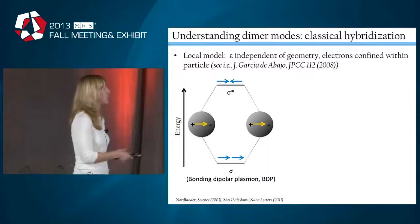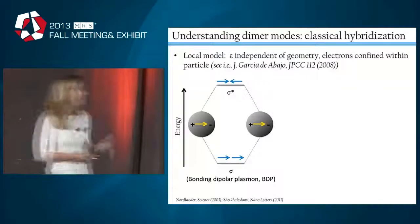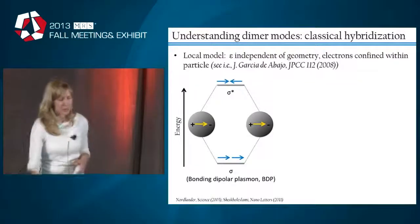Another way of considering this local model is to view it with the lens of hybridization. So if you consider these two longitudinal dipoles in our individual particles, then these dipoles will couple in such a way where you either have a bonding dipolar plasmon, where they're both aligned in phase, or an anti-bonding dipolar plasmon, where they're oriented out of phase.